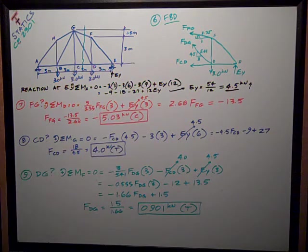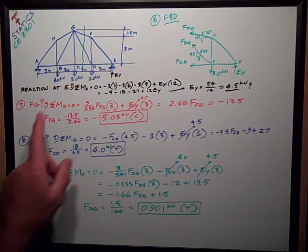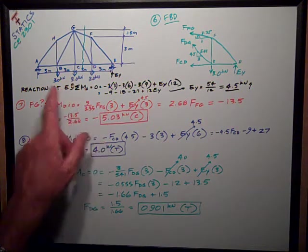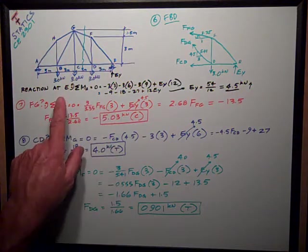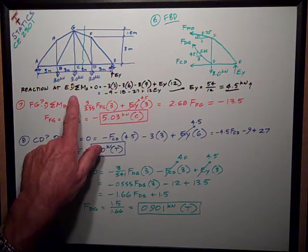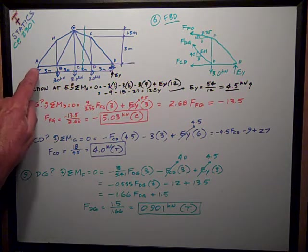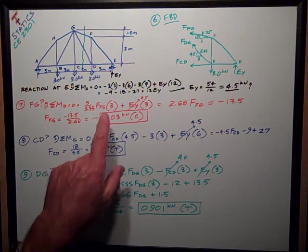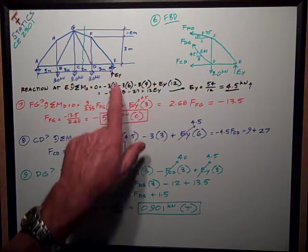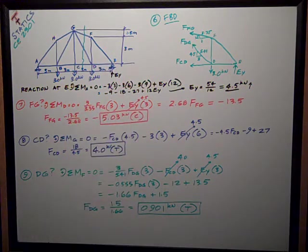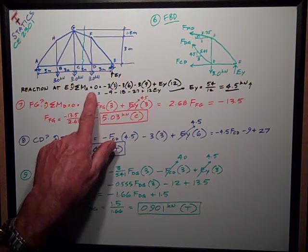FCD is just horizontal. First thing I want to do is solve for the reaction at E, based on the whole truss. I say positive is counterclockwise, sum of the moments about A to eliminate the forces at A. All I have at E is a roller, so I have a vertical force there. Sum of the moments about A is 0.